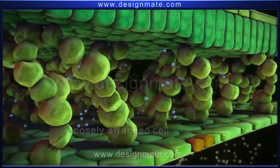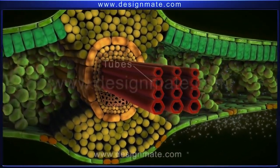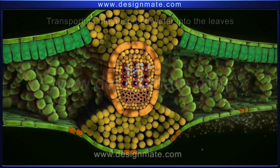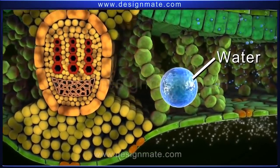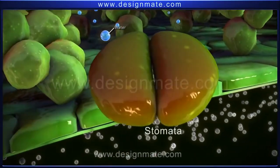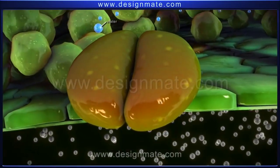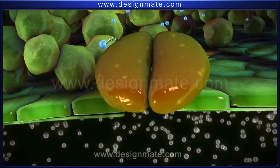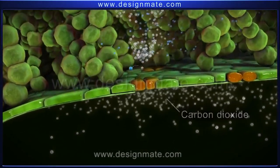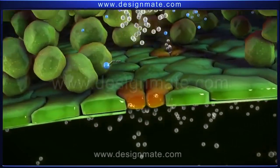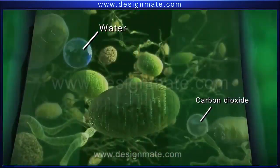The next layer has loosely arranged cells with large air spaces. The section also shows tubes specific for transporting the absorbed water into the leaves. The lower layer has many pores called stomata, and each stoma is surrounded by two guard cells which regulate the opening and closing of the stomata. A leaf absorbs carbon dioxide from the environment through these stomata, which after passing through the air spaces enters into the chlorophyll-containing cells.